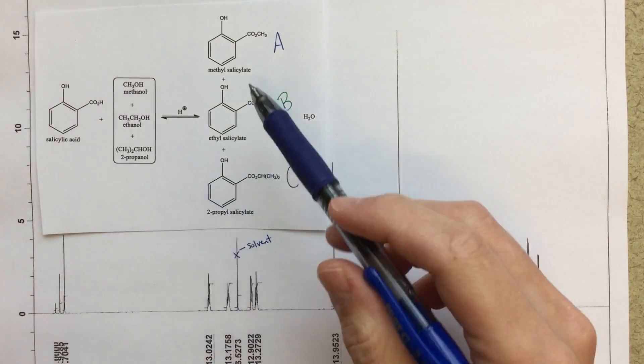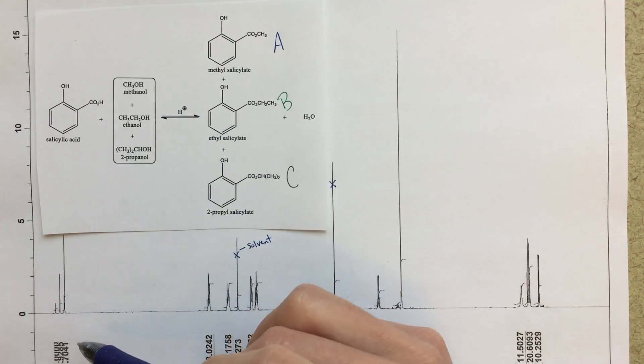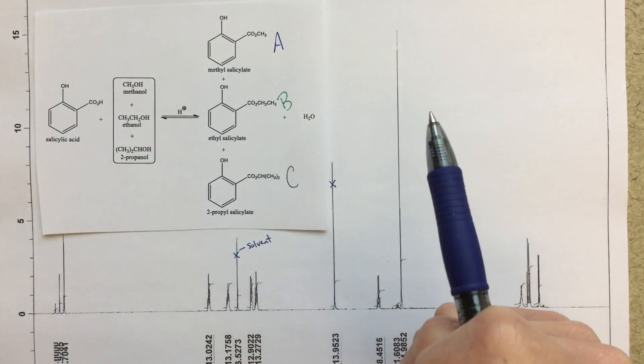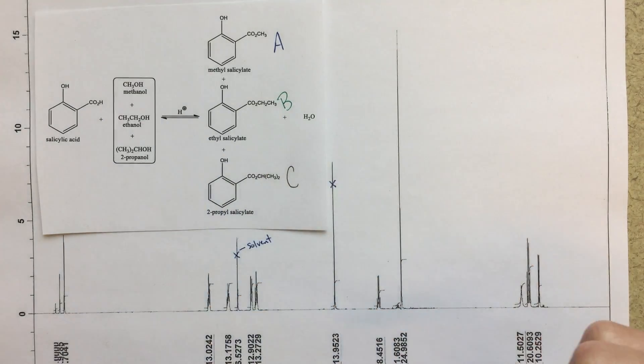Now, it's really hard for us to tell from this point which one is which, right? So we're not going to be able to do that yet. But once we do, once we figure out which one of these is A, B, and C, then we can use the integrations to figure out what the relative percentages are.